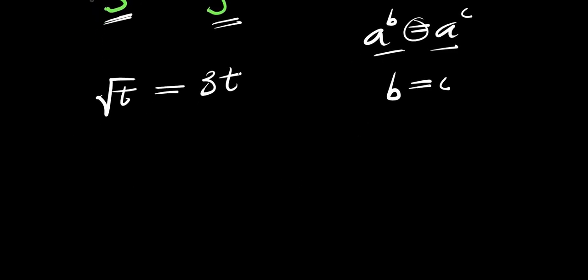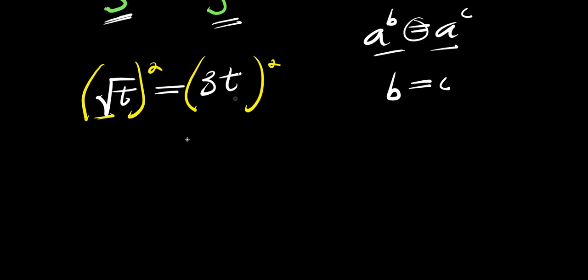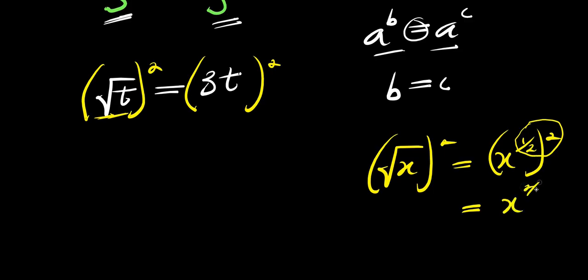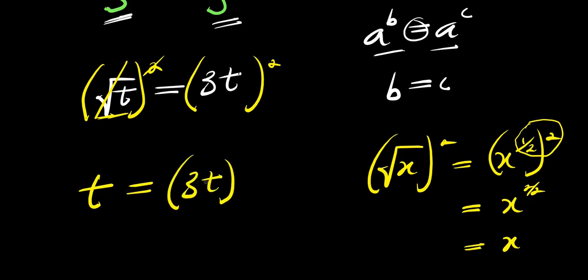So right here, what you are going to do is to eliminate the square root. So you square both parts of this equation. If you have square root of x raised to the power of 2, this simply means you have x power 1 over 2, raised to the power of 2. Multiplying the exponents, 2 times 1 over 2 is 2 over 2, so this gives you x. Applying the same thing here, we have t equals 3 times t, raised to the power of 2.